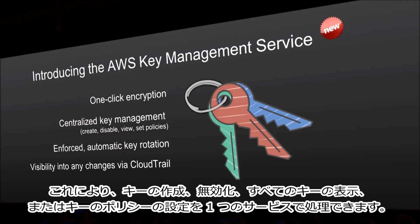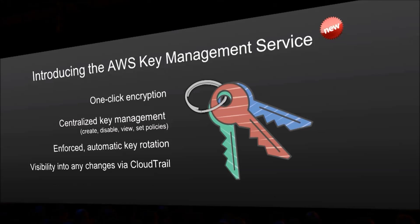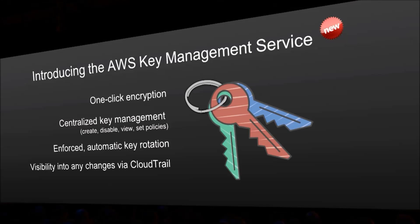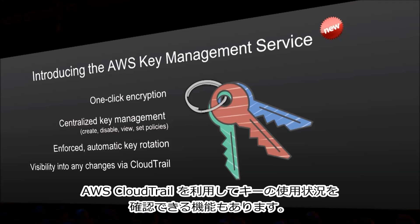You have a central place to create keys, disable keys, view all those keys, or set policies on keys. You have enforced and automated key rotation, so you're actually rotating your keys. And then you have visibility into any accesses to those keys through AWS CloudTrail.